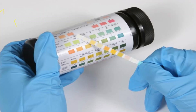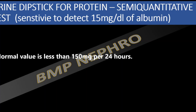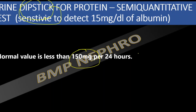A few important points regarding the urine dipstick assay for proteinuria, for the MD and DM residents. This urinary dipstick for protein analysis is basically a semi-quantitative test. The normal 24-hour urine protein excretion is less than 150 milligrams, and this urine dipstick assay can detect protein in urine samples.